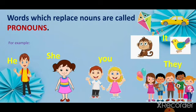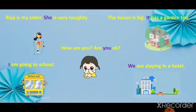He is used for masculine gender, that is male. She is used for feminine gender, that is female. You is used when you are talking to someone. They is used for more than one person. And it is used for animals, birds, or things.